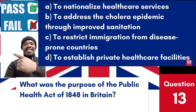Question 13: What was the purpose of the Public Health Act of 1848 in Britain? a. To nationalise health care services. b. To address the cholera epidemic through improved sanitation. c. To restrict immigration from disease-prone countries. d. To establish private health care facilities. Answer: b. To address the cholera epidemic through improved sanitation. The Public Health Act of 1848 was enacted in response to public health crises like the cholera epidemic, establishing a centralised board of health to oversee improvements in sanitation and public health infrastructure.